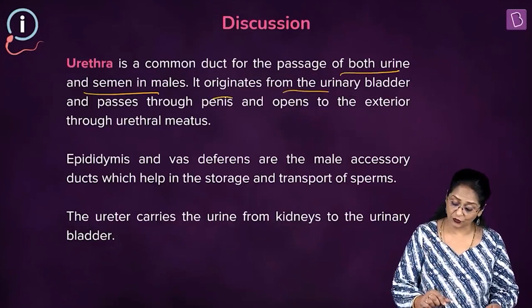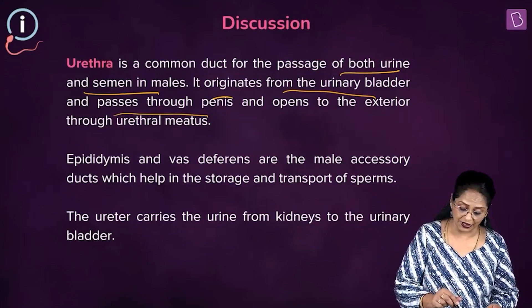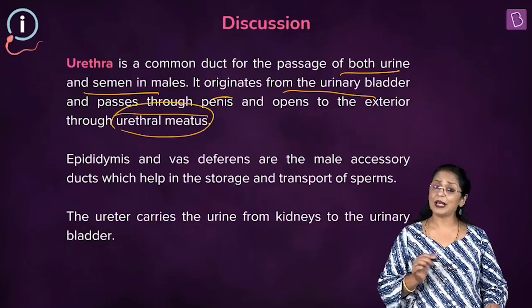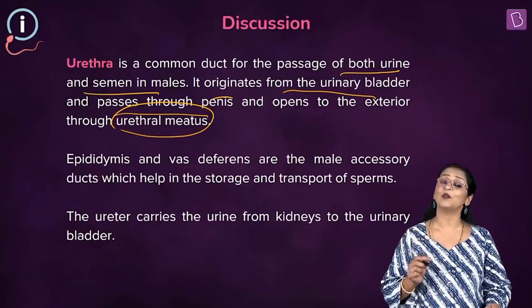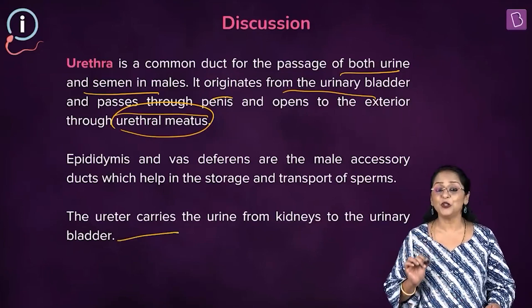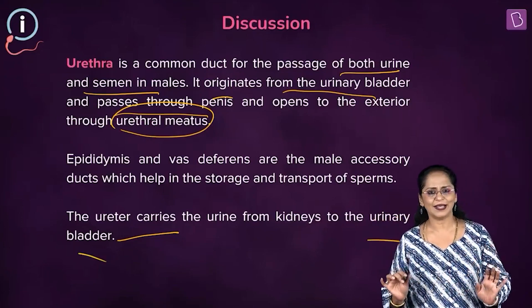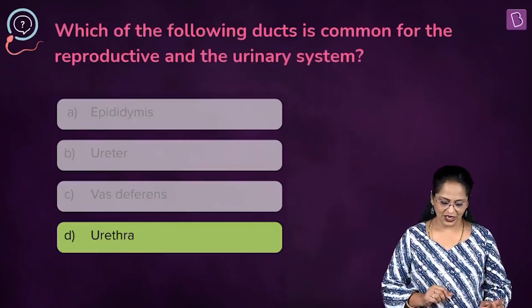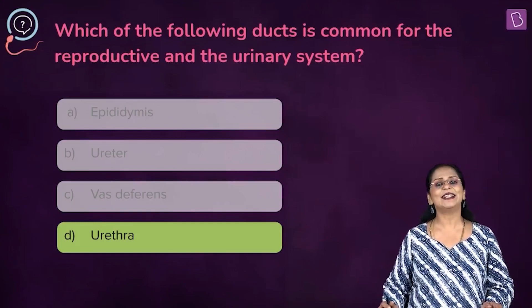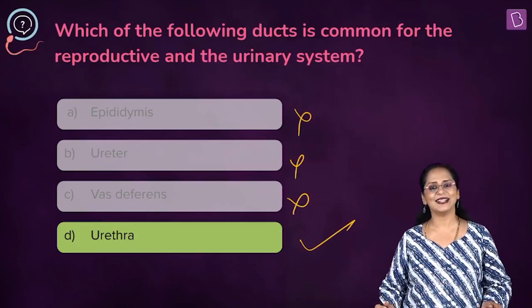The urethra originates from the urinary bladder, passes through the penis, and opens to the exterior through an opening called the urethral meatus. The epididymis and vas deferens are part of the accessory ducts of the male reproductive system. The ureter carries urine from the kidney to the urinary bladder and is nowhere connected to the reproductive system. So D, the urethra, is the right option — eliminate A, B, and C.